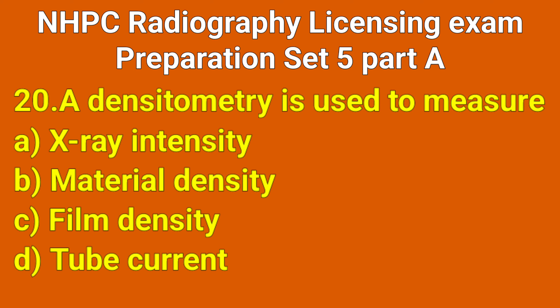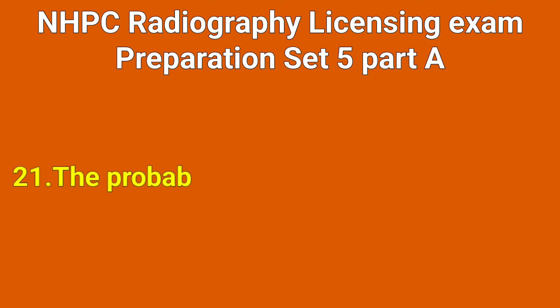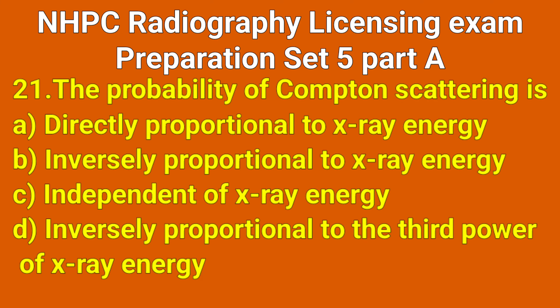Question number 20: A densitometer is used to measure which option? Correct answer: option C, film density.